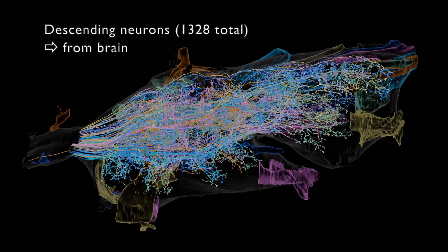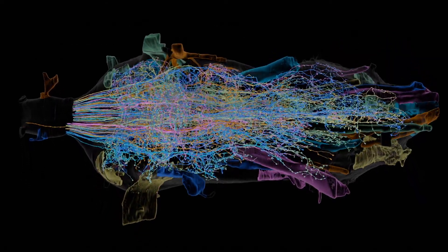Descending neurons carry information from the brain to the ventral nerve cord via the neck connective.